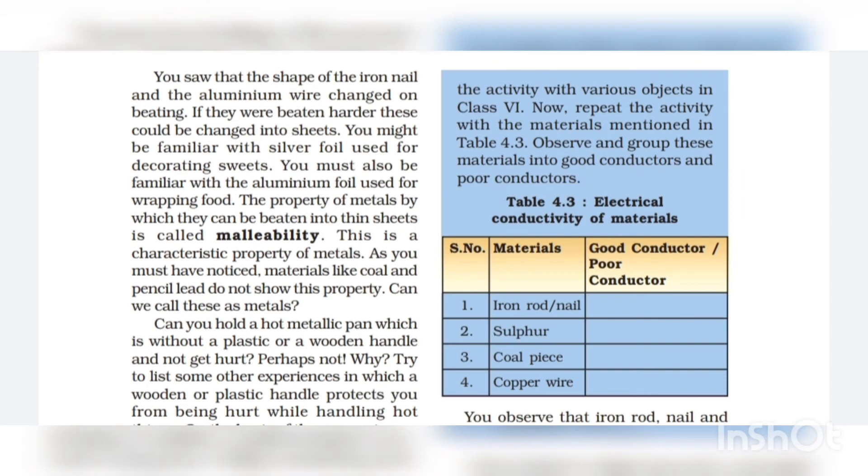You see that the shape of the iron nail and the aluminium wire changed on beating. If they were beaten harder, these could be changed into sheets. You might be familiar with silver foil used for decorating sweets. You must also be familiar with the aluminium foil used for wrapping food. The property of metals by which they can be beaten into thin sheets is called malleability.